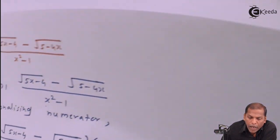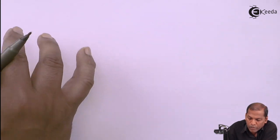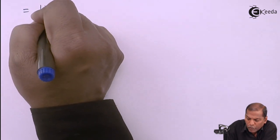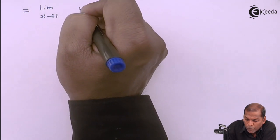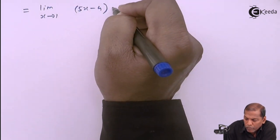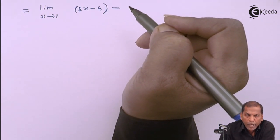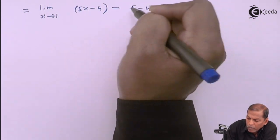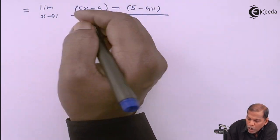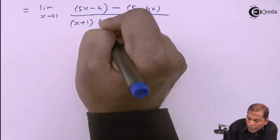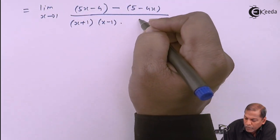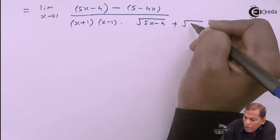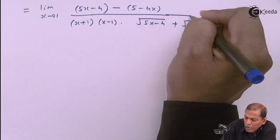Now the square and root cancel in the numerator. So the next step is: limit x tends to 1. The first term is (5x minus 4), then minus, and the second term is (5 minus 4x). This is upon (x plus 1)(x minus 1) times square root of (5x minus 4) plus square root of (5 minus 4x).